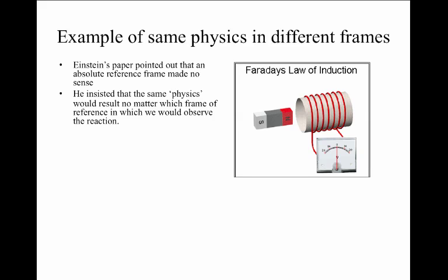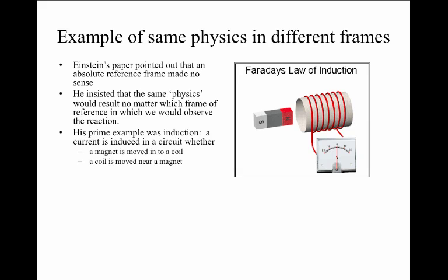He pointed out that it's important to think that there would be the same physics that would result, in this case, a current flowing in a circuit, irrespective of what frame of reference in which we observe a reaction. And in the case of Faraday's law of induction, you might remember that it doesn't matter whether or not we move a magnet inside of a coil or we move a coil over a magnet. In either case, there is a change in magnetic flux, and that's what causes a voltage in the circuit and therefore a current in the circuit.